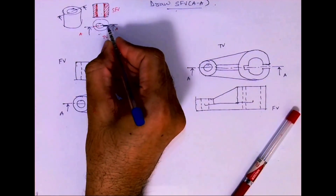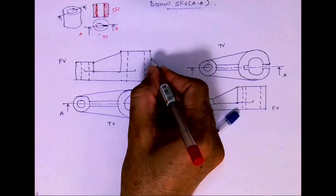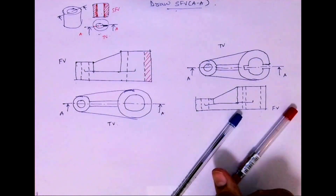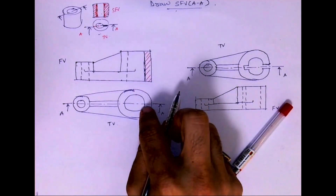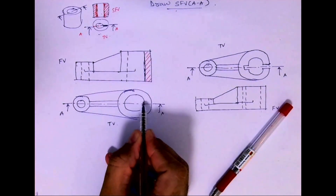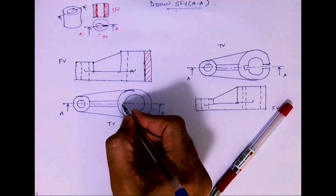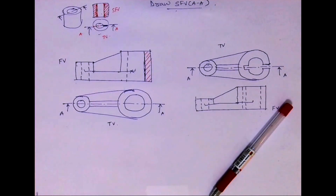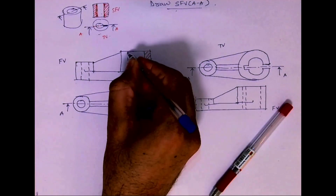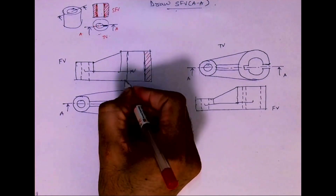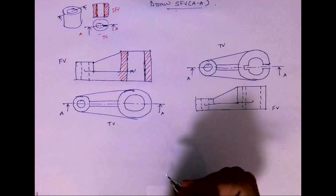Now we will apply the same logic. See this — it is getting cut, so here I need to do hatching. This dotted line will become dark. Same way, it is getting cut over here. Here we are not cutting anything, so this will go away — it will be blank. This part is getting cut, so this dotted line will become dark and the hatching will come here.